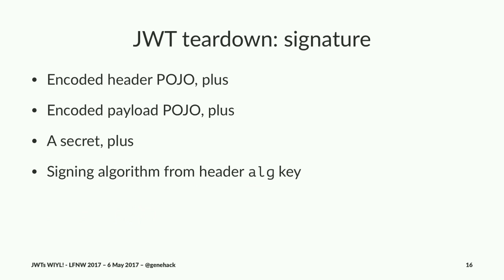And then finally we have the signature. You make the signature by taking the encoded header POJO, concatenating it with the encoded payload POJO, and then using a secret and a signing/hashing algorithm such as HMAC SHA-256 to generate the signature. The signing algorithm is typically specified in the algorithm key in the header.